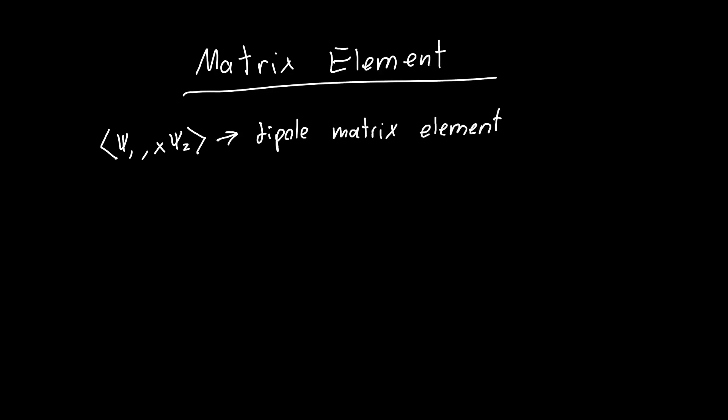The reason it's called a matrix element is because of these indices, 1 and 2. These represent a two-level system with energy E2 and energy E1, with wave functions psi 2 and psi 1. This gives the overlap or the strength of interaction between psi 2 and psi 1.